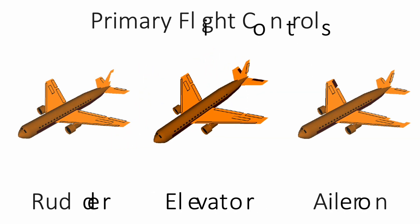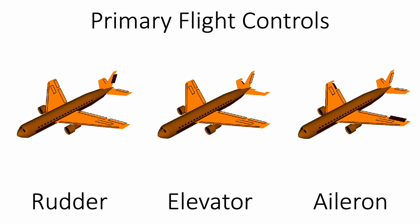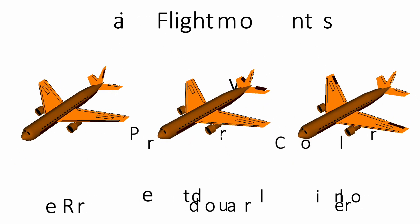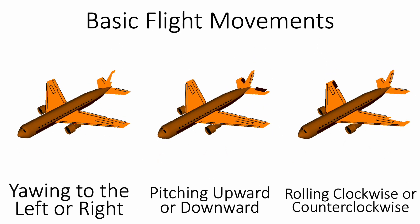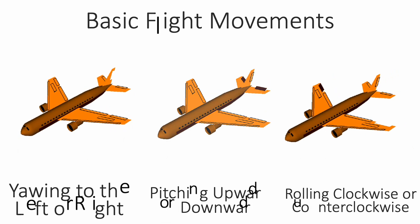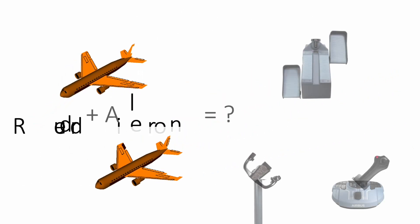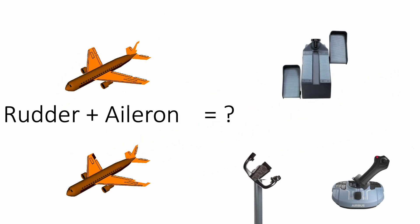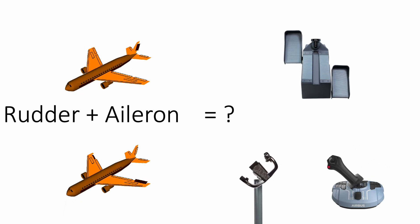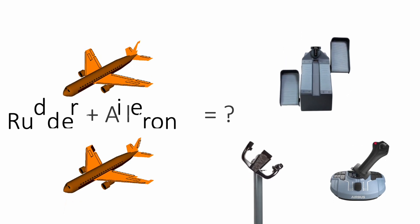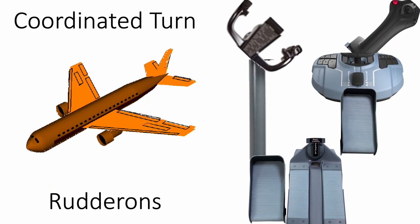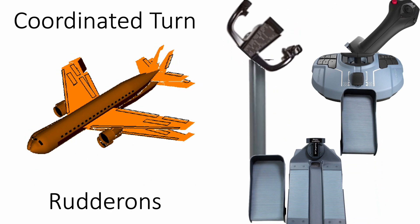The other two are the rudder and ailerons. They are used for yawing and rolling the airplane respectively. I have also revealed in one of my earliest video uploads that a rudderon combines the functions of an elevator and an aileron.